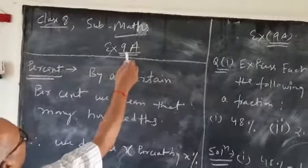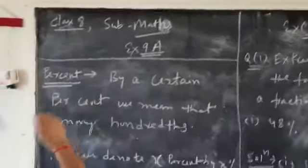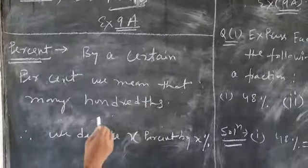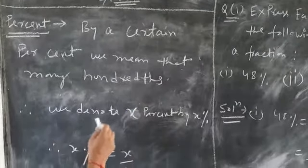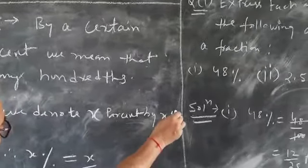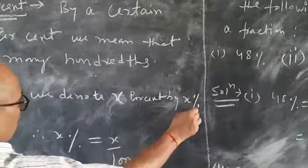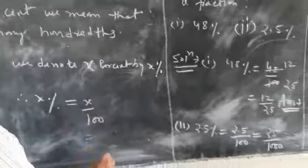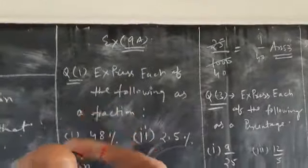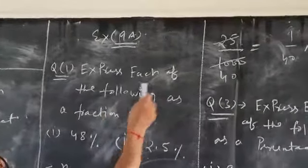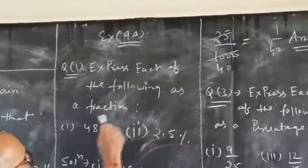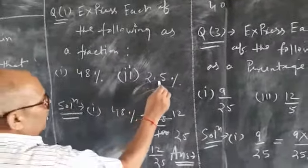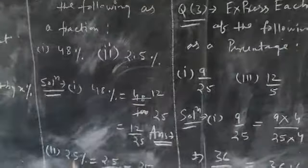Subject: Maths, Exercise 9A. Percent: By a certain percent, we mean that many hundredths. We denote x percent by this symbol. Therefore, x percent is equal to x upon hundred. Exercise 9A, Question number 1: Express each of the following as a fraction.